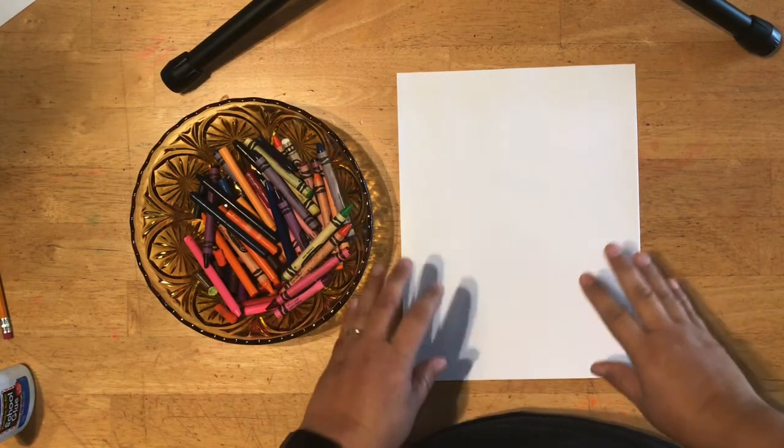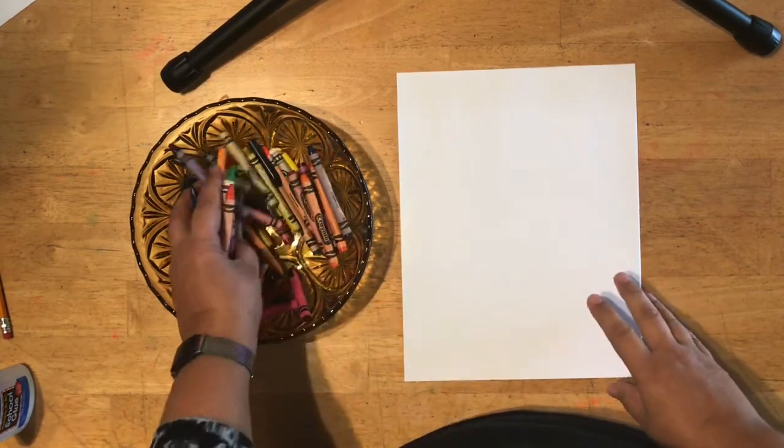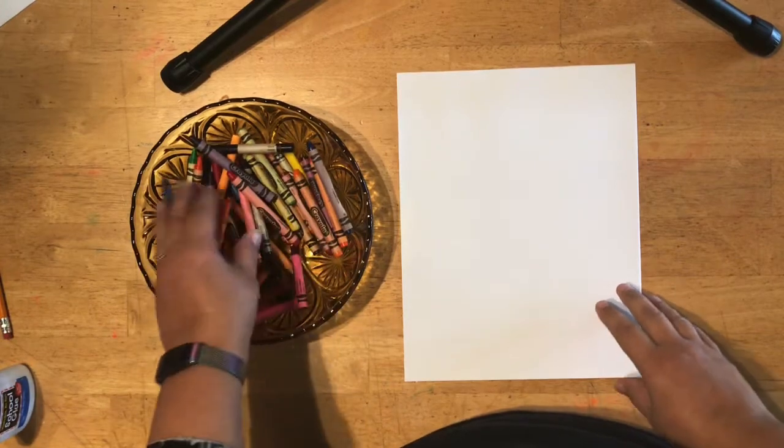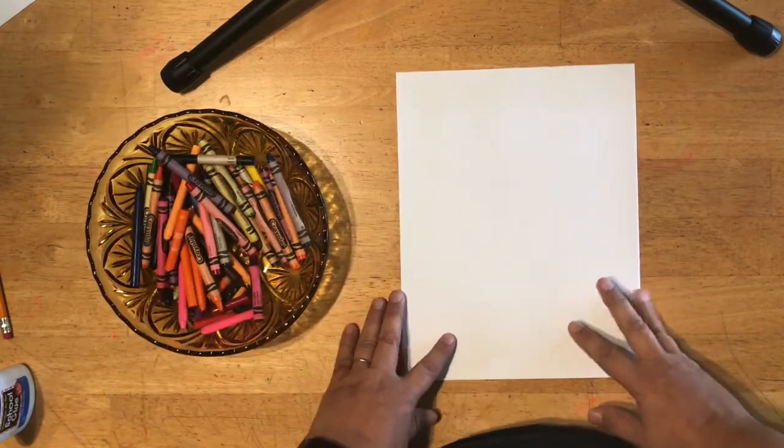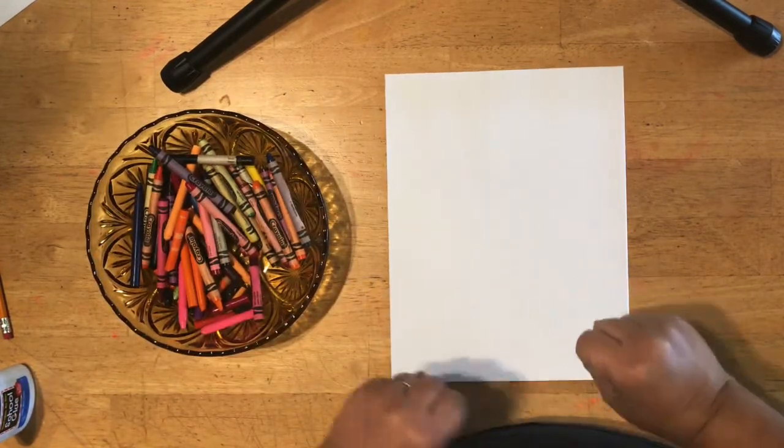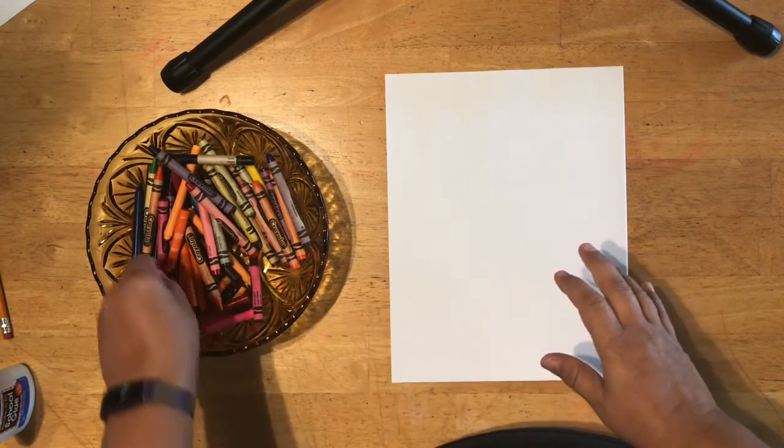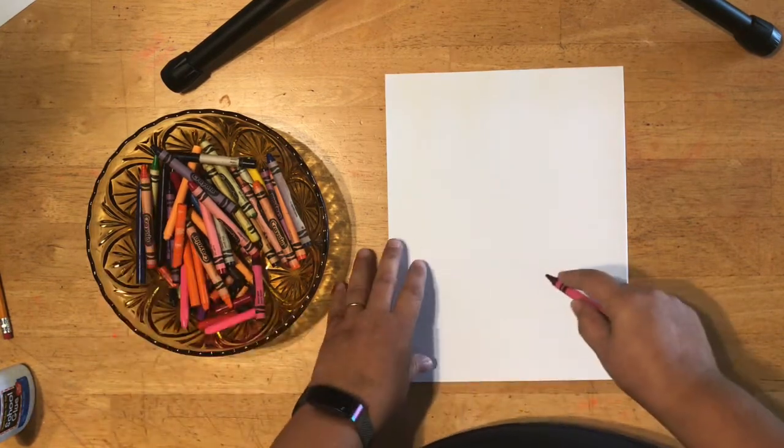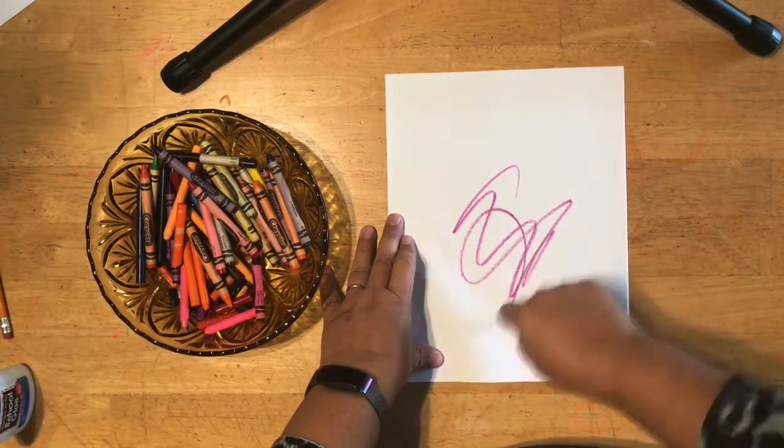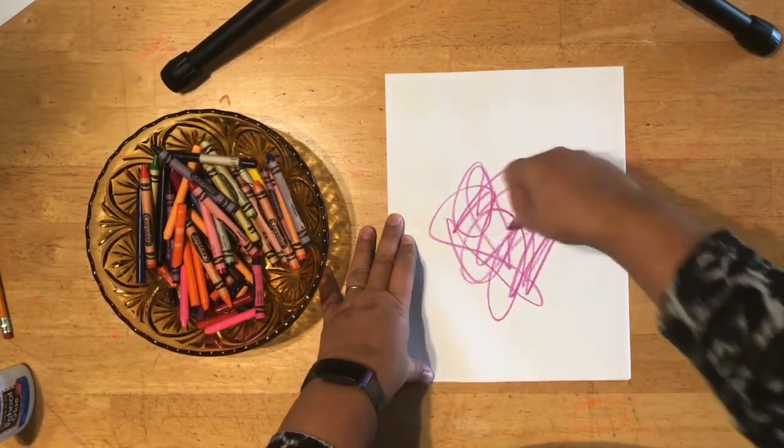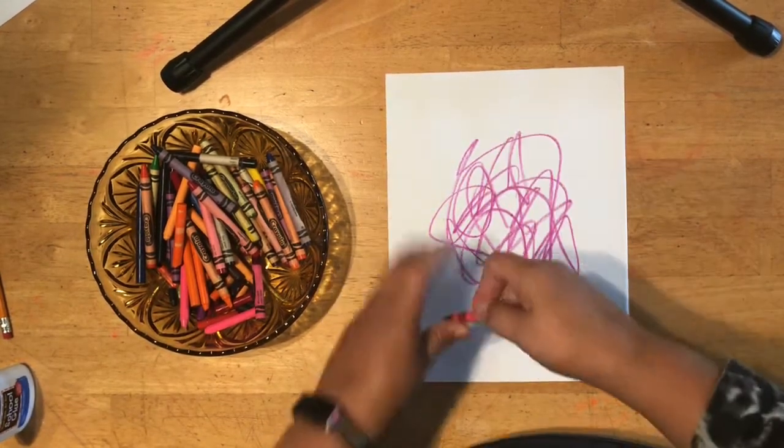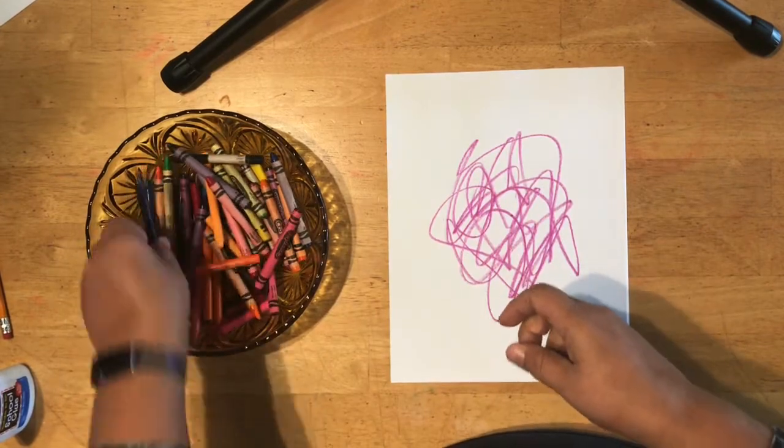All you're going to need is some paper and some crayons—new crayons, old crayons, any crayons. You're gonna just take whichever color you want and scribble. You can scribble any kind of scribble you feel like scribbling.